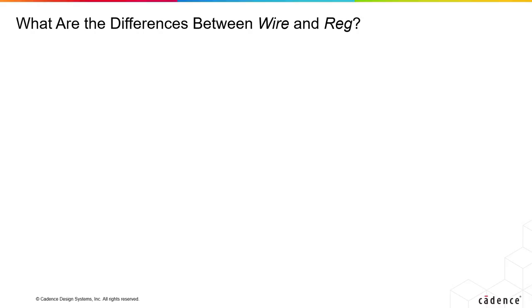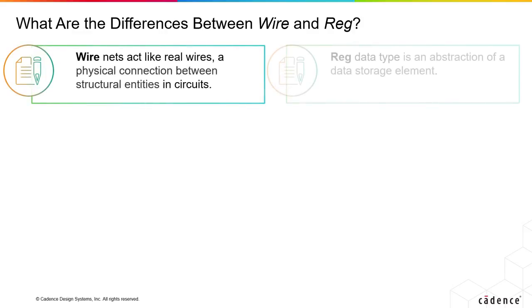Let's understand what are the differences between a wire and a reg. The two most common structural data types are wire and reg. Both of them have a single bit structure.